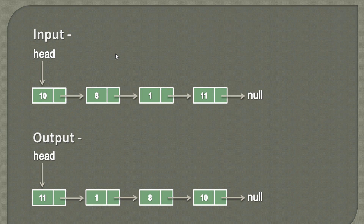Suppose we have a linked list with nodes 10, 8, 1, and 11, and we provide this linked list as an input. After its reversal, the linked list becomes 11, 1, 8, 10. So basically it reverses the list — 10, 8, 1, 11 gets reversed and becomes 11, 1, 8, 10.